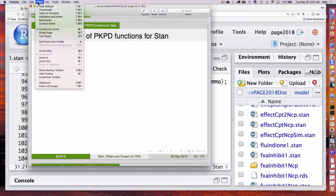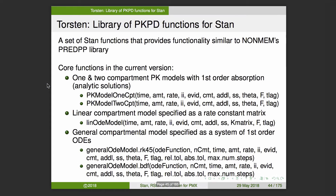Torsten is a set of functions that do some of the kinds of things I showed you for calculating PK and PKPD outcomes given an event schedule. It provides functionality similar to NONMEM's PREDPP library. Its core functions include one- and two-compartment PK models with first-order absorption using analytic solutions, one for dealing with linear compartmental models where the user specifies a rate constant matrix, and a more general case using those two ODE solvers internally while also handling the sequence of events like dosing events and the associated bookkeeping.